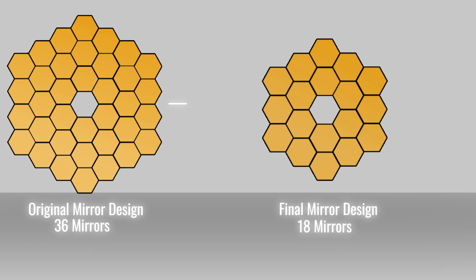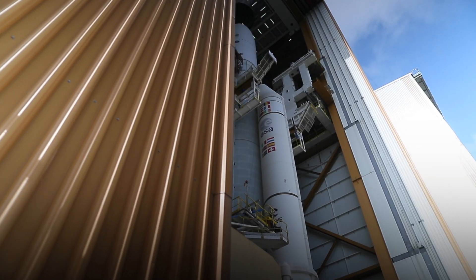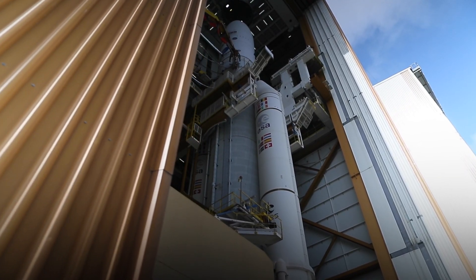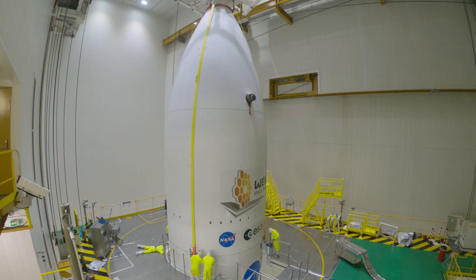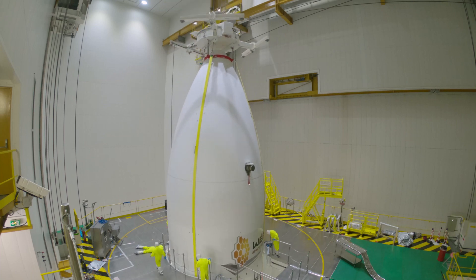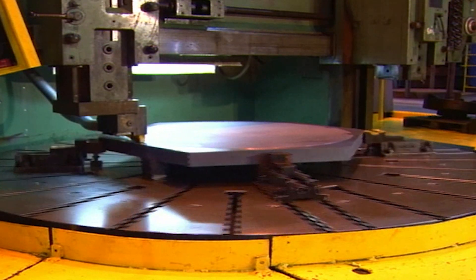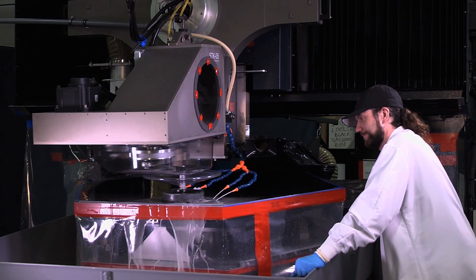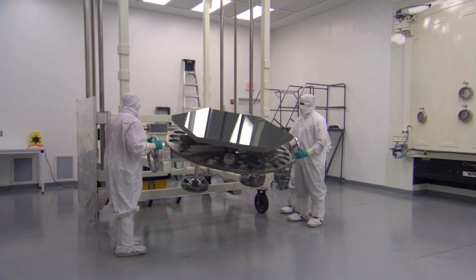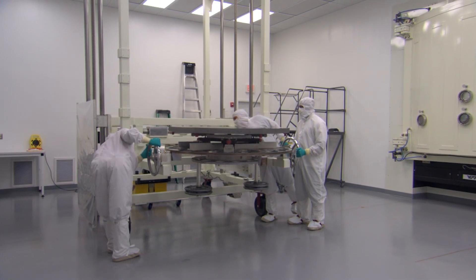The original design had us at eight and a half meters in diameter; we ended up flying about six and a half meters. A lot of those early design decisions were driven by mass, cost, and schedule. The eight and a half meter mirror was just going to be too heavy for a rocket, and too big to fold up inside the fairing. Also, manufacturing beryllium segments with 36 individual pieces was much more time-consuming than building just 18. Those were the major changes to the primary mirror design.